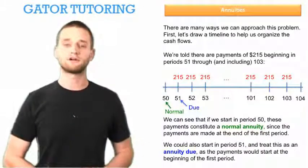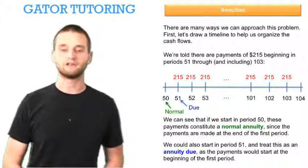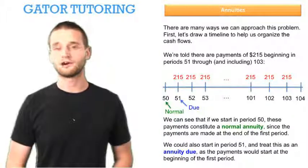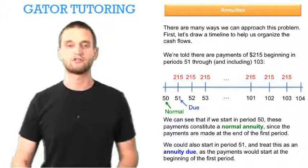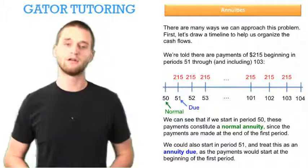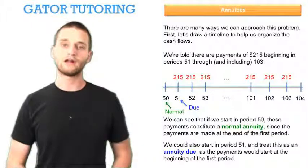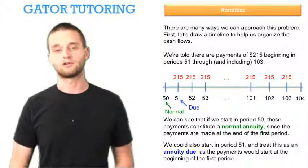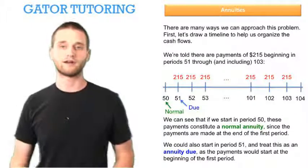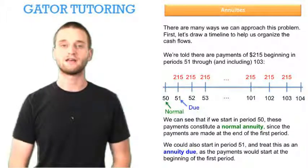Now we could also start in period 51 and treat this as an annuity due as the payments would start at the beginning of the first period. So if we were standing on period 51, the first payment of $215 occurs today. If we wanted to treat it like that we would have to set our calculator mode to begin and treat it as an annuity due.